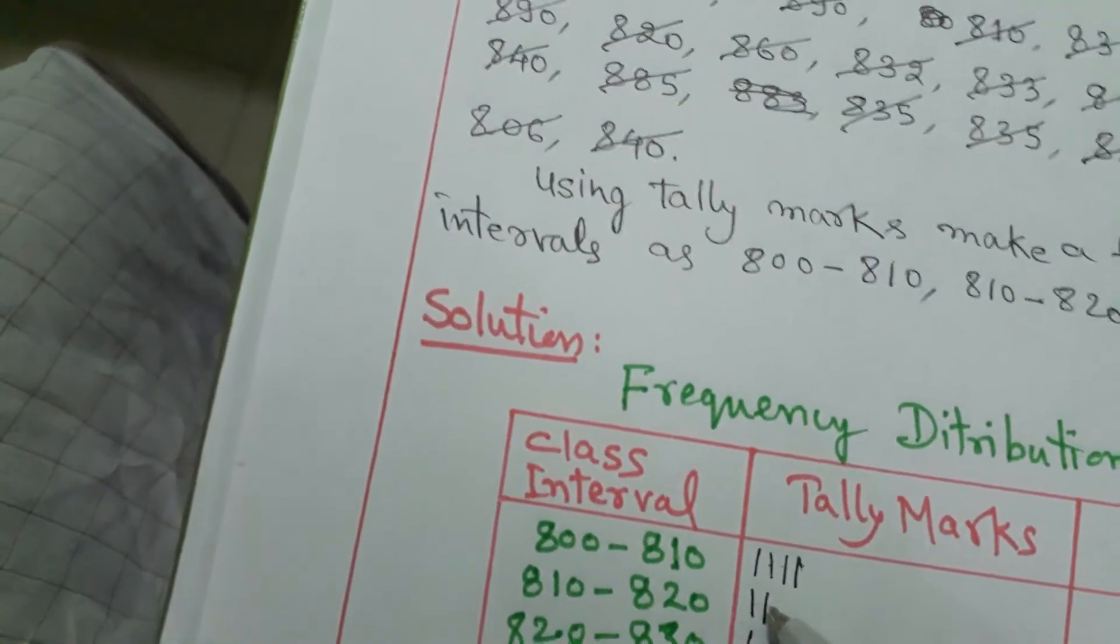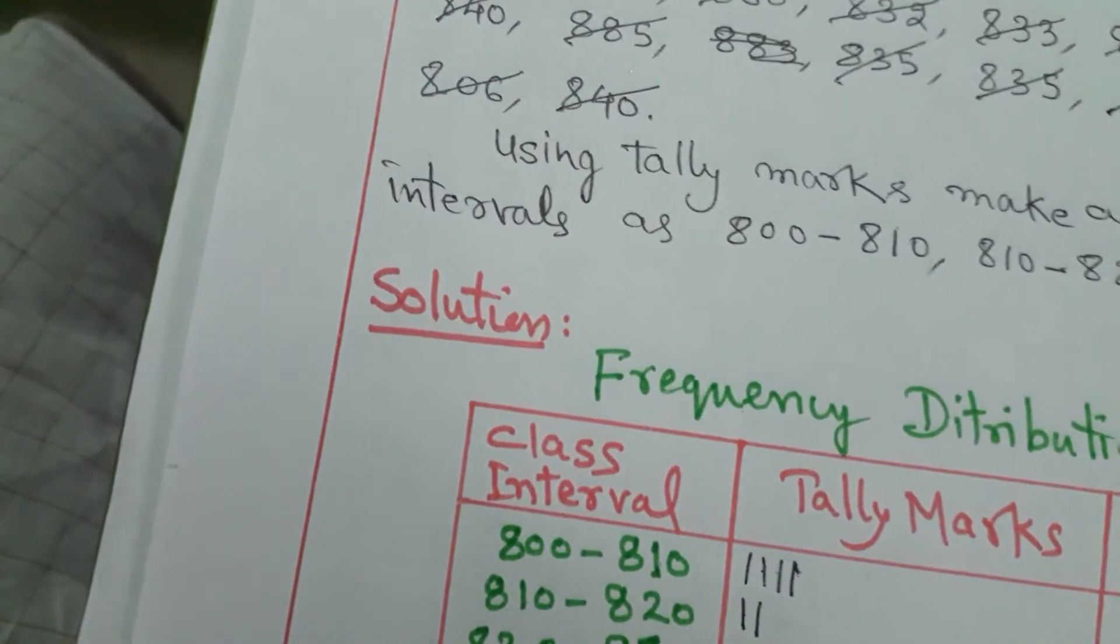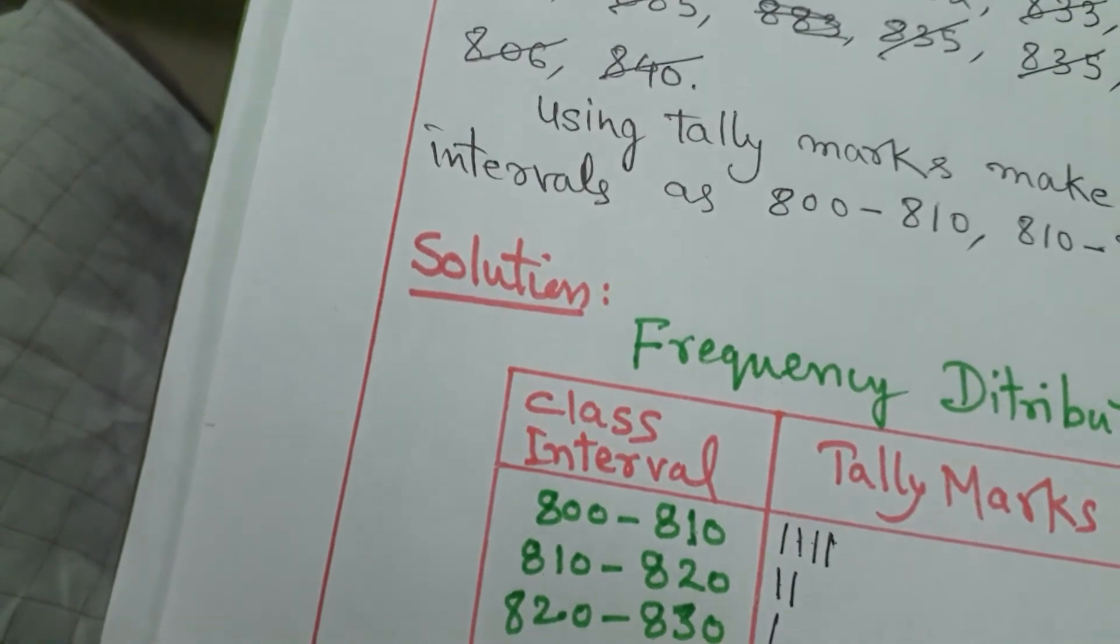So you total, you count it: one, two, three, four, five, six, seven. Seven plus five, seven plus ten, seventeen, eighteen, nineteen, twenty, twenty-one, twenty-two, twenty-three, twenty-four, twenty-five, twenty-six, twenty-seven, twenty-eight, twenty-nine, thirty. Exactly coming thirty.